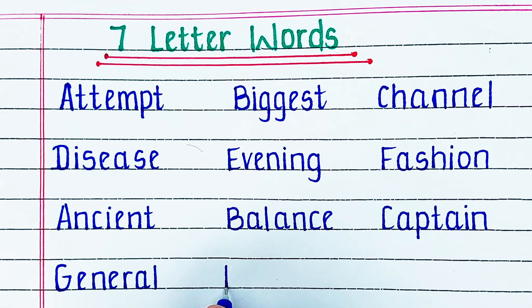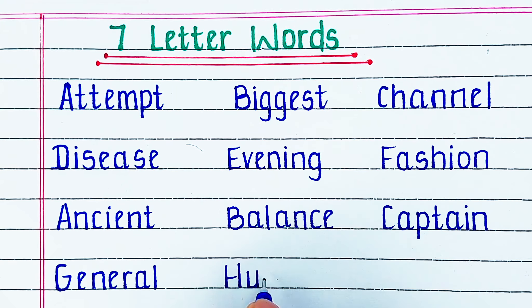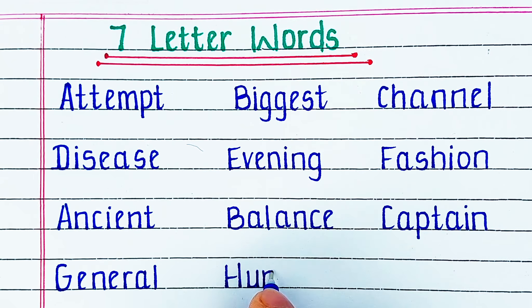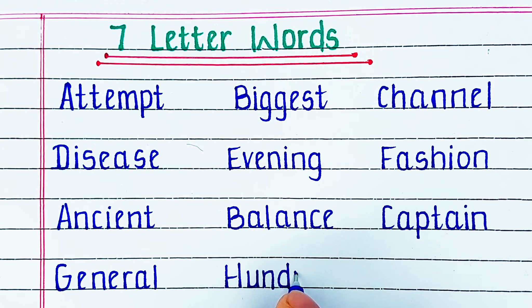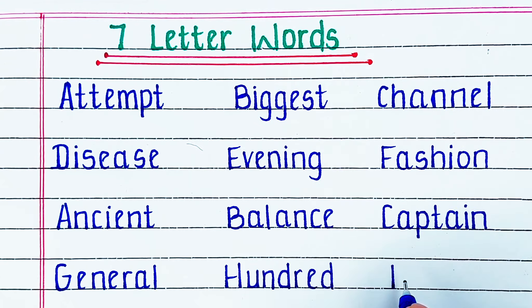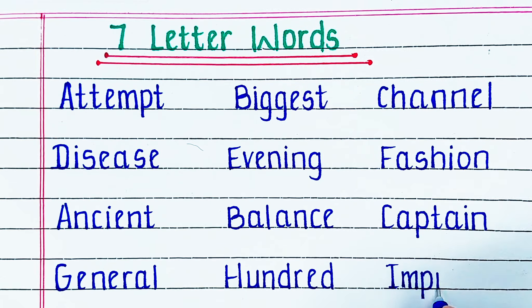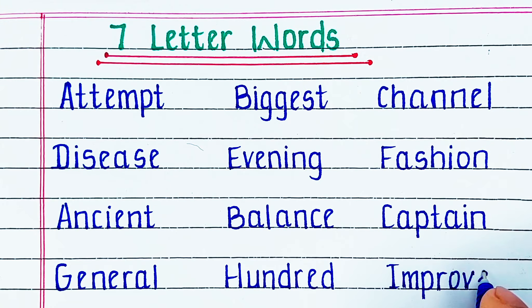Next is Alphabet H. The word is H U N D R E D, 100. Next is Alphabet I. The word is I M P R O V E, improve.